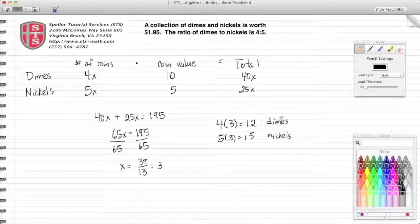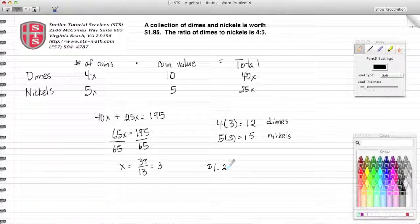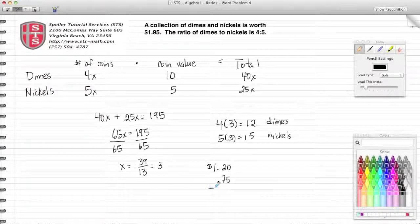Well, now to check my work, I know that 12 dimes is worth $1.20, and I know that 15 nickels has a value of 75 cents.